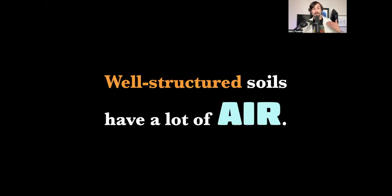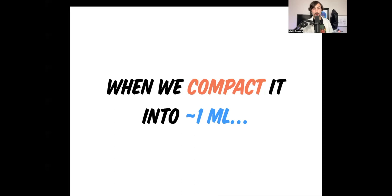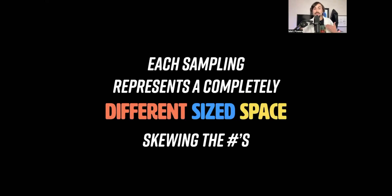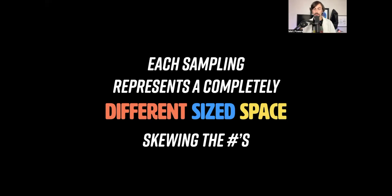Well-structured soils have a lot of air — 50% or more. So when we compact soil into 1 ml, each sampling represents a completely different size space; it's a different volume. Every year you create more structure in your soil, you skew the numbers more. If your soil is a different structure from another soil, they're not comparable — they represent different soil volumes.